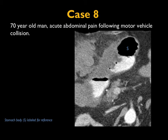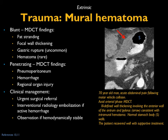Another case: patient with acute abdominal pain following an MVA. You might look at this and say the stomach is abnormal — could this be an incidental carcinoma? In fact, this was an intramural hematoma — a new finding in the setting of trauma. You can see the stomach involved in blunt trauma, though other organs are more commonly involved. There's focal stranding and wall thickening. Gastric rupture is exceedingly rare. For penetrating injuries, you would expect pneumoperitoneum, hemorrhage, and regional organ injury. Surgical management is usually necessary; if there's active bleeding, embolization can be performed.